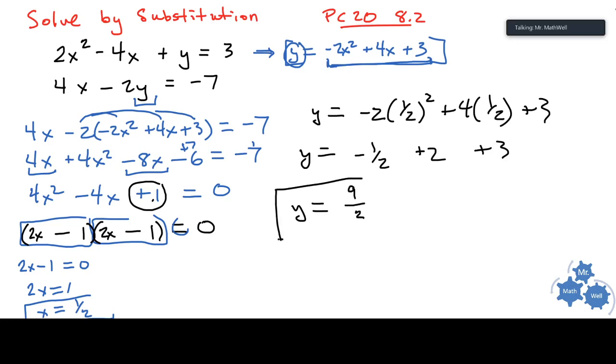So, looks like we have x and y solved here, and our solution would be x equals one half, y equals nine over two, or maybe you want to write it as the intersection point, one half, nine over two. All right, so those values are confirmed, that is the answer to that, solving by substitution.